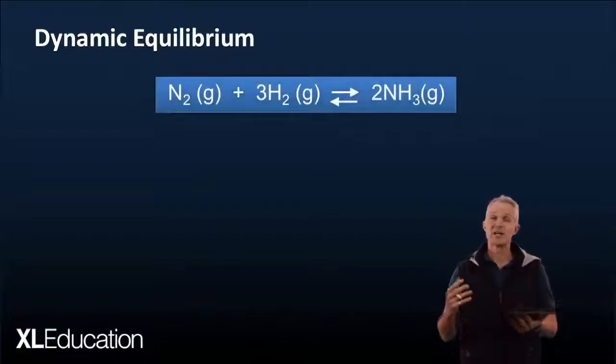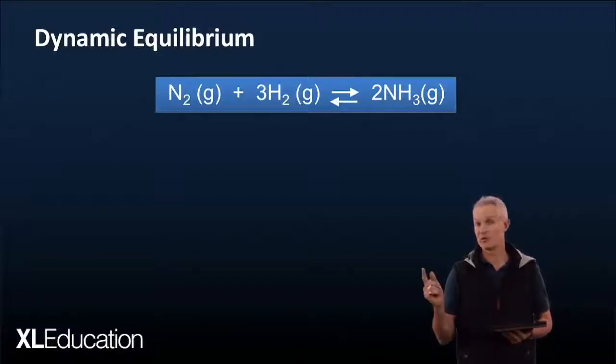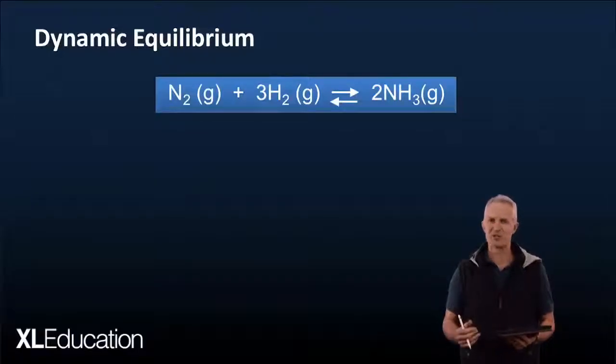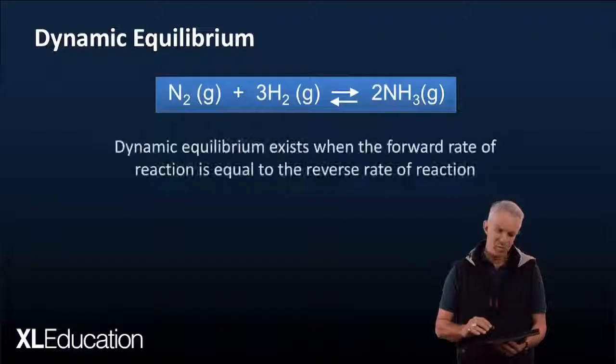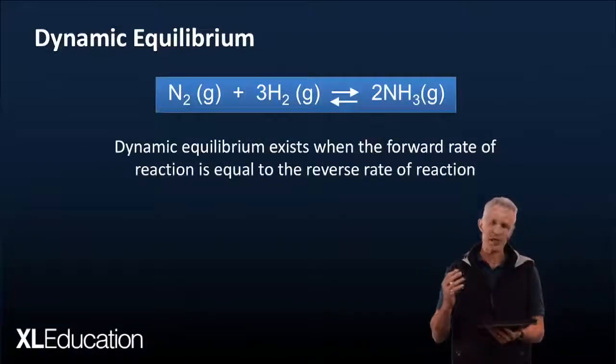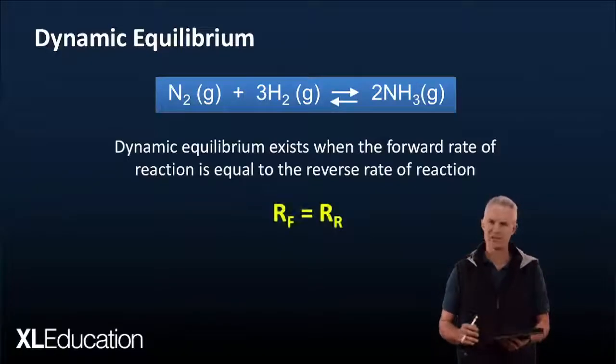So starting with dynamic equilibrium, what's it all about? Well first thing to understand is that in order to have a dynamic equilibrium equation, it's got to be a reaction that can go both ways. So for example that nitrogen plus hydrogen is going to give us ammonia and then can go back again. We would describe dynamic equilibrium in a definition as dynamic equilibrium exists when the forward rate of reaction is equal to the reverse rate of reaction.